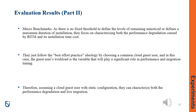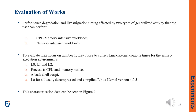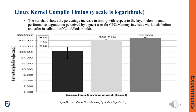They follow the best-effort practice ideology by choosing a common cloud guest user, and the guest user's workload is the variable that plays a significant role in performance and migration timing. They characterize both the performance degradation and live migration, which are affected by two types of generalized activity the user can perform. To evaluate the first type, they collected Linux kernel compile times for the same three execution environments — L0, L1, and L2 — using CPU and memory native workloads. A bash shell script on L0 decompressed and compiled Linux kernel version 4.0.5. As shown in the bar chart, after the rootkit is installed, the targeted guest user experiences a 25.7% decrease in speed associated with the kernel compile type of CPU-memory workloads.